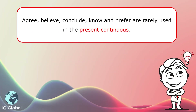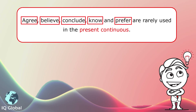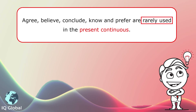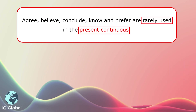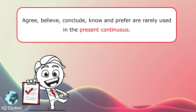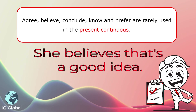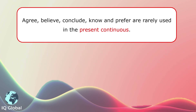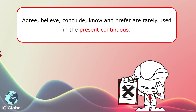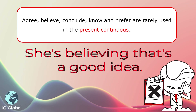Interestingly, the words agree, believe, conclude, know, and prefer are rarely used in the present continuous. For example, we would say 'she believes that's a good idea.' We would never say 'she's believing that's a good idea.'